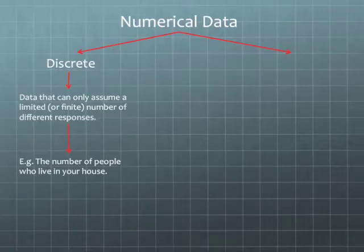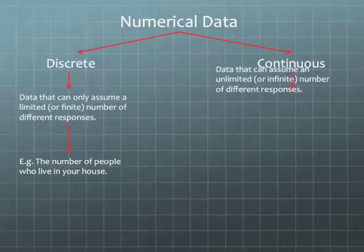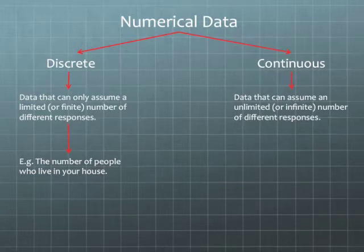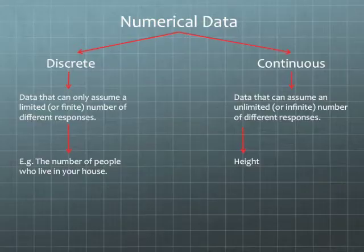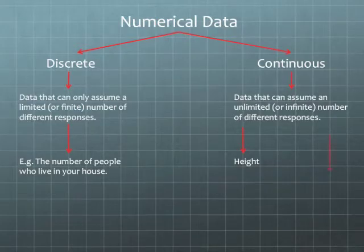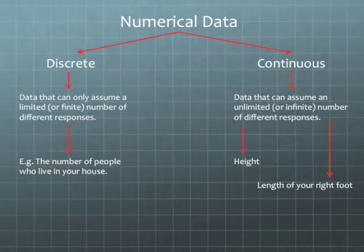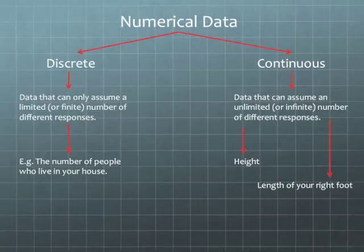The second type of numerical data is called continuous. Continuous data is data that can assume an unlimited or infinite number of different responses. An example of continuous data is height — you could be 180.1 centimeters, you could be 164.5 centimeters, and so on. Because of the decimals and the different possible heights, we can assume an unlimited or infinite number of different responses. Another example of continuous data might be the length of your right foot, which might be 17.4 centimeters or 19.2 centimeters — there's an unlimited or infinite number of different responses when the data is continuous.